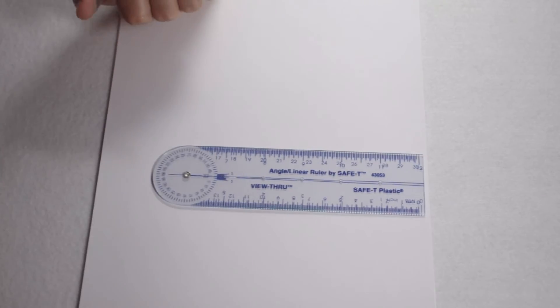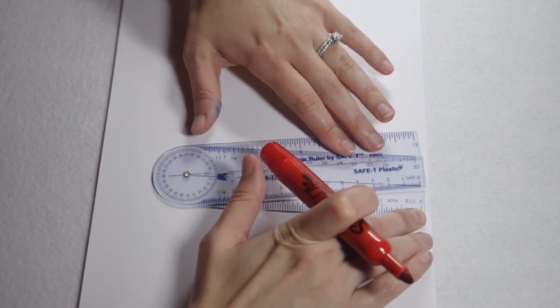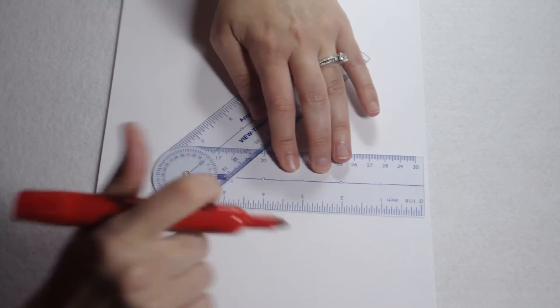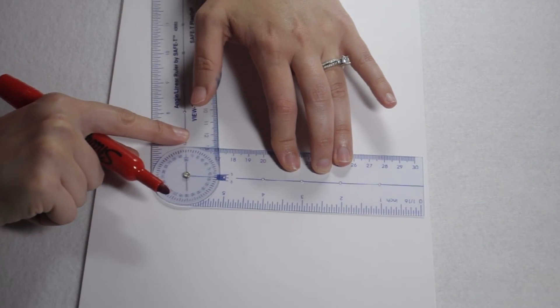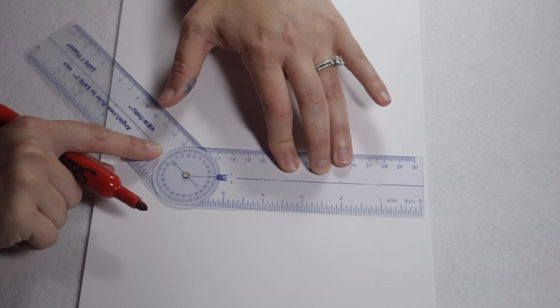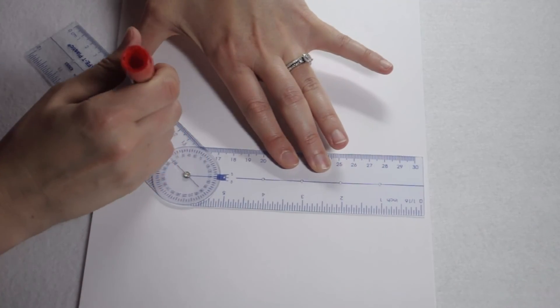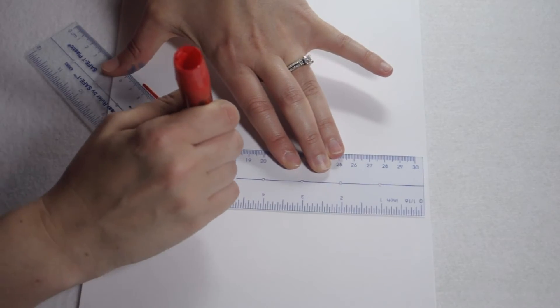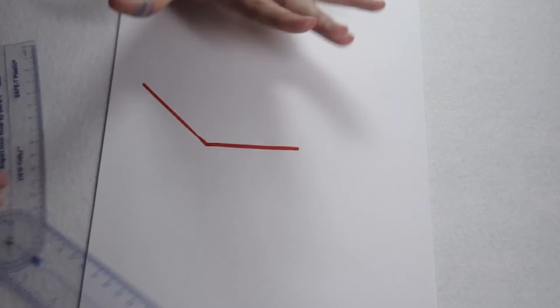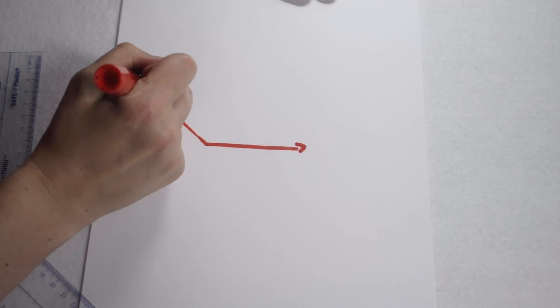To draw a 135 degree obtuse angle, we're going to do the same thing. We're going to open our top leg and keep rotating until we hit 135. So again, we can simply hold our angle ruler down and trace along the inside and label it to show we measured the 135 degrees for the obtuse angle.